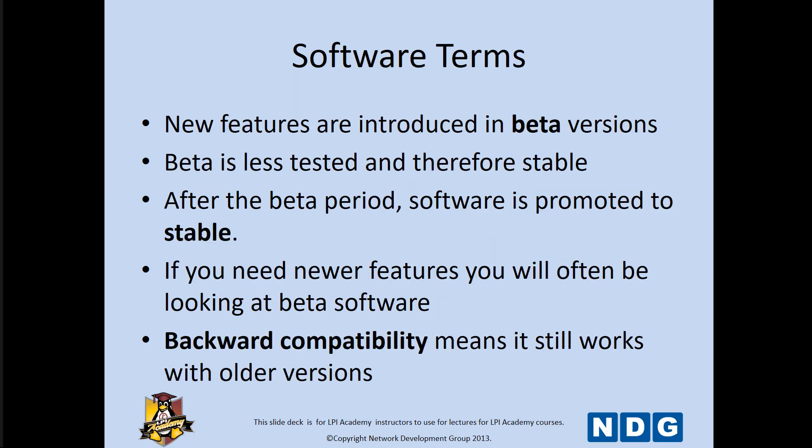New features are introduced typically in an alpha or beta version. An alpha is an early onset stage that hasn't had all the kinks worked out. After it's been worked on for a little bit it will go into a beta version. Beta version is still not ready to release and is not stable per se. But you can see between the alpha, beta, and release stages that significant changes may occur. After the beta period it's typically classified as ready to release, signaling its stability. If you need newer features you'll often be looking at beta software, because beta software comes out sooner — but it's not necessarily tested.